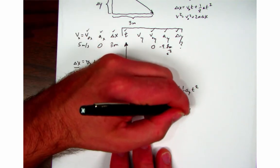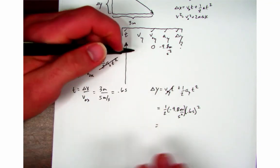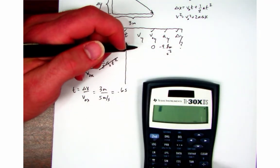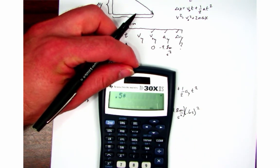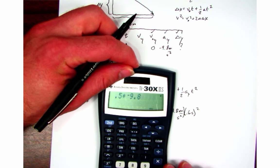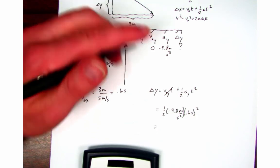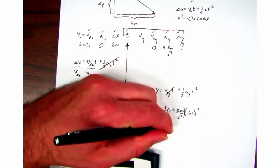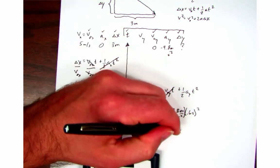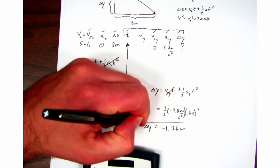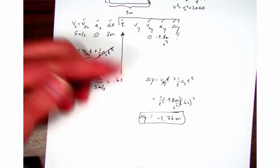So let's get out the calculator and that's going to be 0.5 times negative 9.8 times 0.6 squared equals negative 1.76 meters. So that's the vertical displacement of the ball as it rolls off the table.